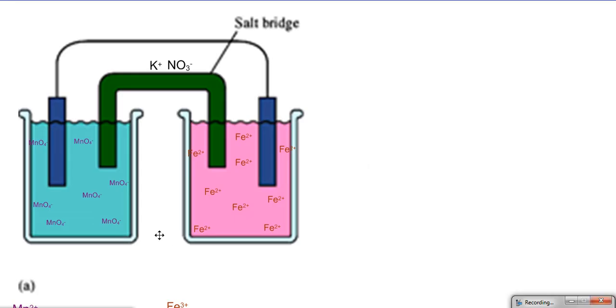So we need something to balance out charge, and we have something like that in the form of a salt bridge. A salt bridge is a u-shaped piece of glassware filled with agar and some neutral salt like potassium nitrate.